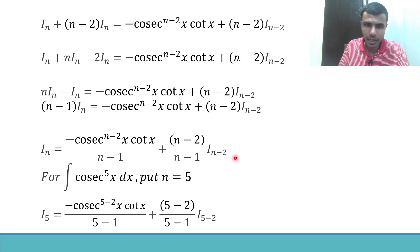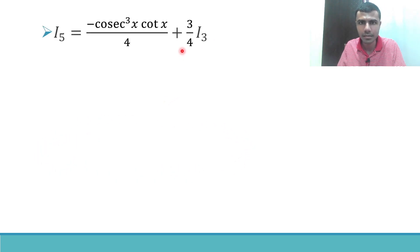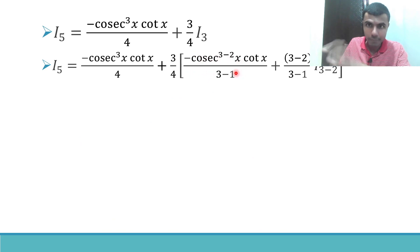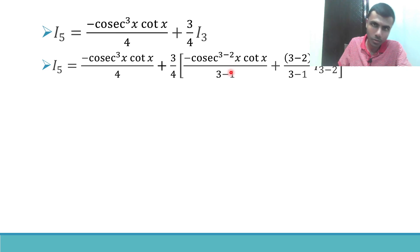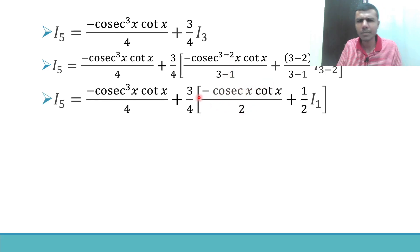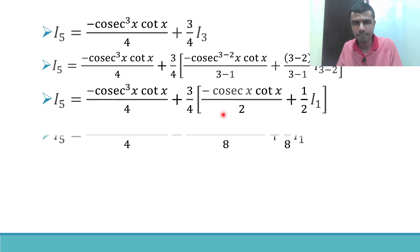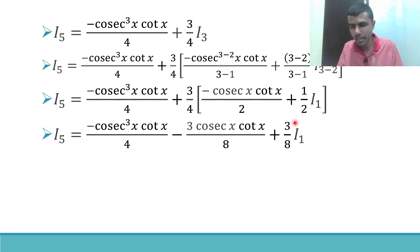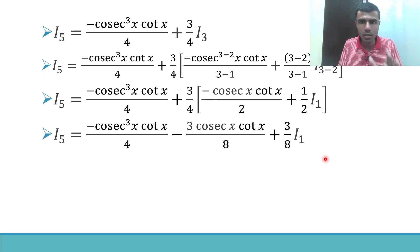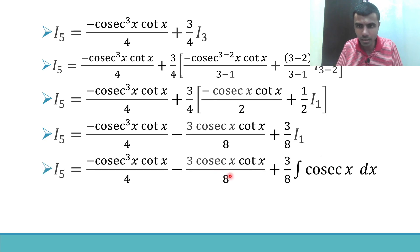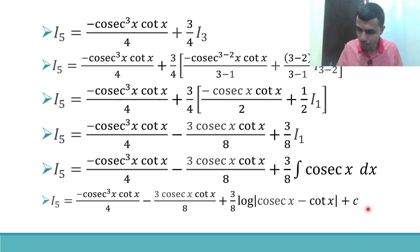For I_3 with n = 3: I_3 = [−cosecant(x)·cot(x)] / 2 + (1/2)·I_1. And I_1 = integral of cosecant(x) dx = ln|cosecant(x) − cot(x)| + C. Substituting back: I_3 = −(3/4)·cosecant(x)·cot(x) + (3/8)·ln|cosecant(x) − cot(x)| + C, and this gives us the complete expression for I_5.